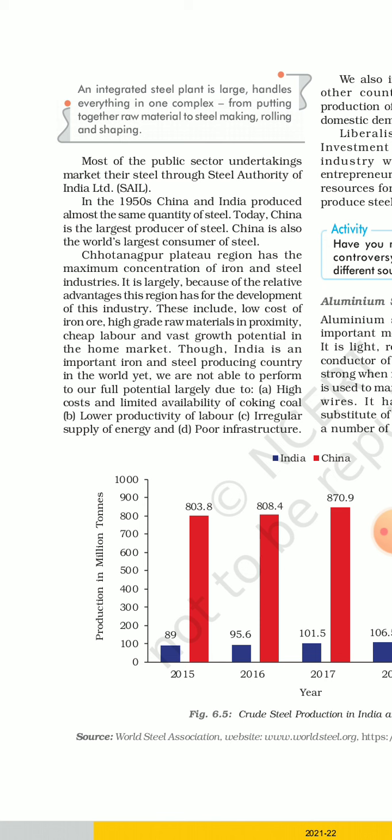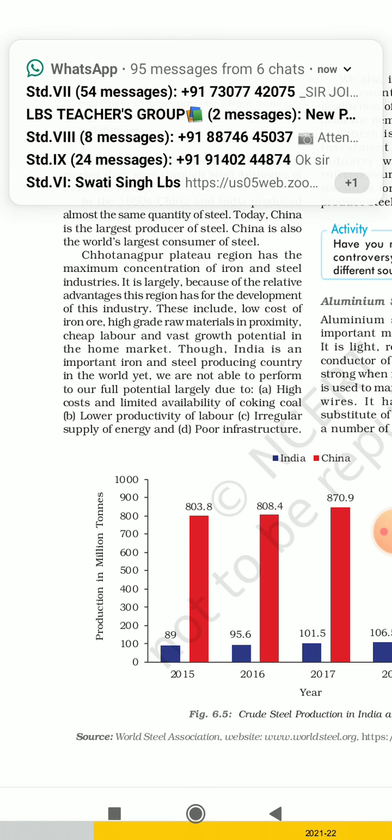The key locational factors are: low cost of iron ore, low freight rate, high grade raw material — high grade meaning high quality — available in proximity, and cheap labor. Also, vast growth potential in the home market.